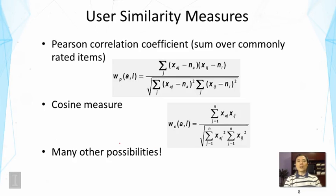One popular approach is to use the Pearson correlation coefficient. This would be a sum over commonly rated items, and the formula is a standard Pearson correlation coefficient formula as shown here.